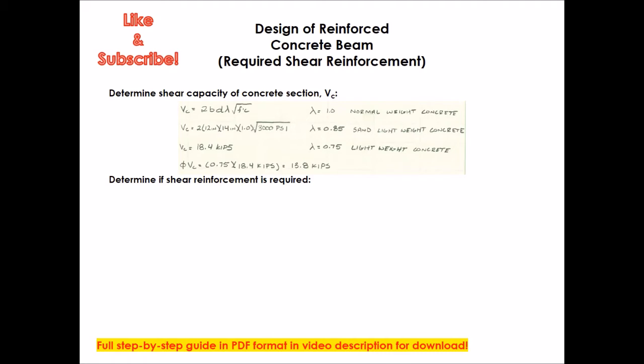And if you plug that in, you see it's 2 times 12 inches, which is the width of your beam, times 14 inches, the depth of the tension reinforcement. Please do not confuse d with the depth of the beam. Times 1, times the square root of 3000 psi. I get Vc equals 18.4 kips. You want to apply a strength reduction factor phi on that Vc. So phi Vc equals 0.75 times 18.4 kips equals 13.8 kips. That is our factored Vc, strength of concrete section.